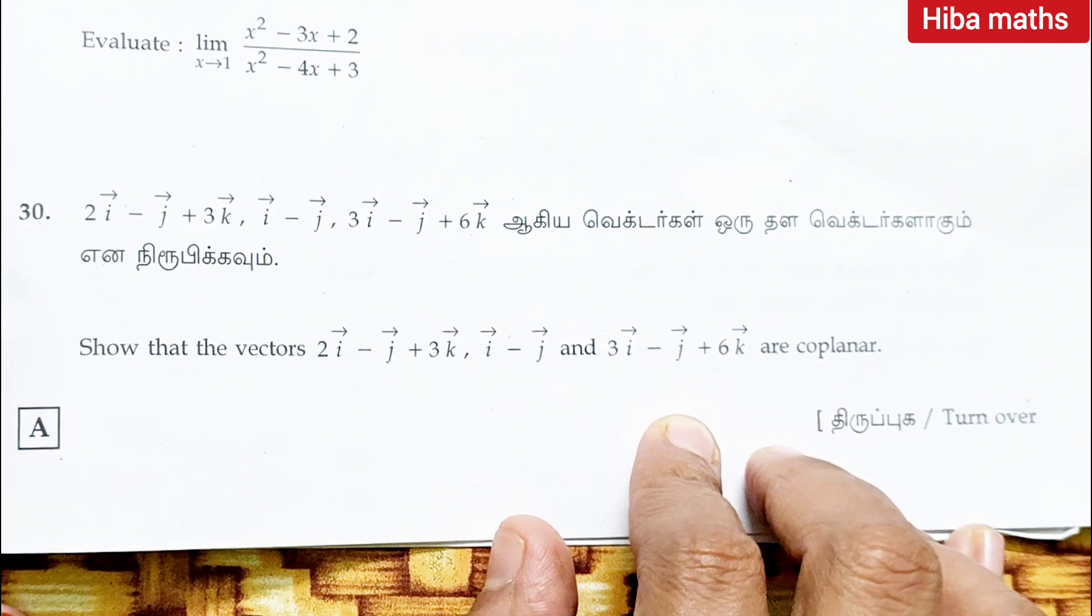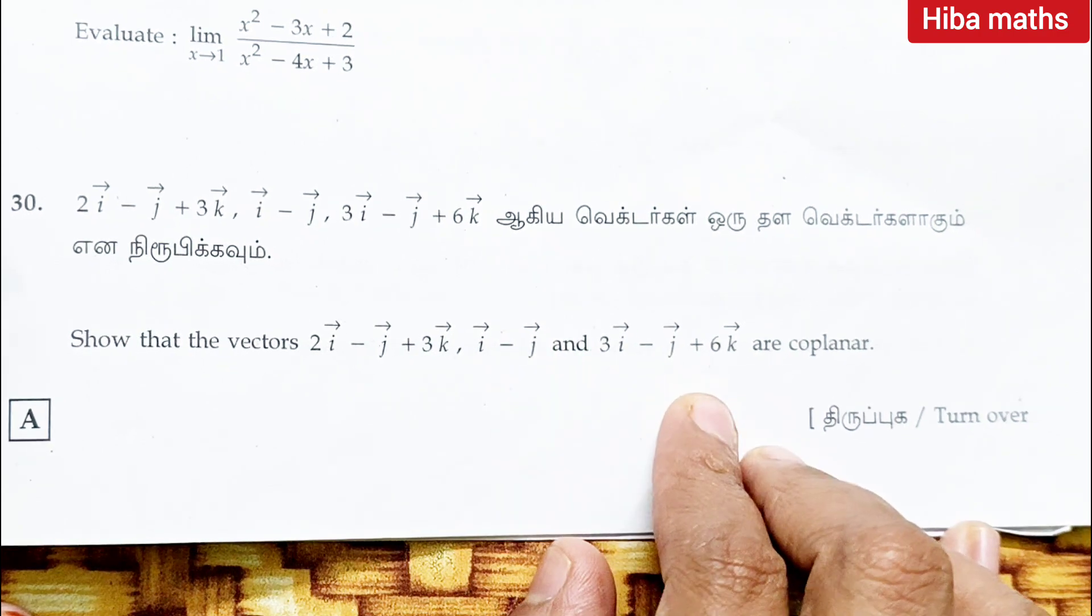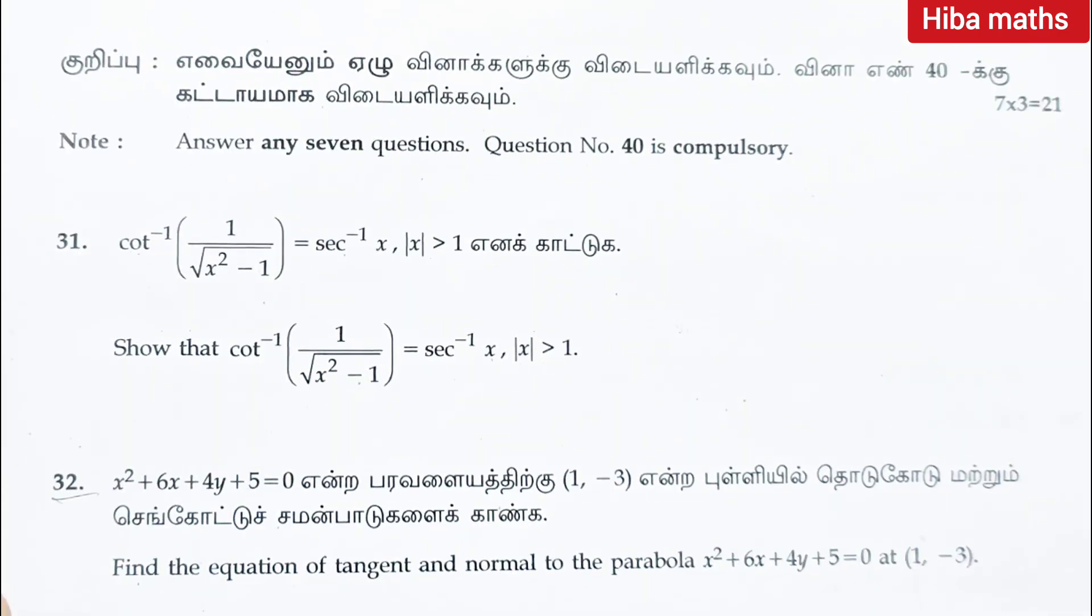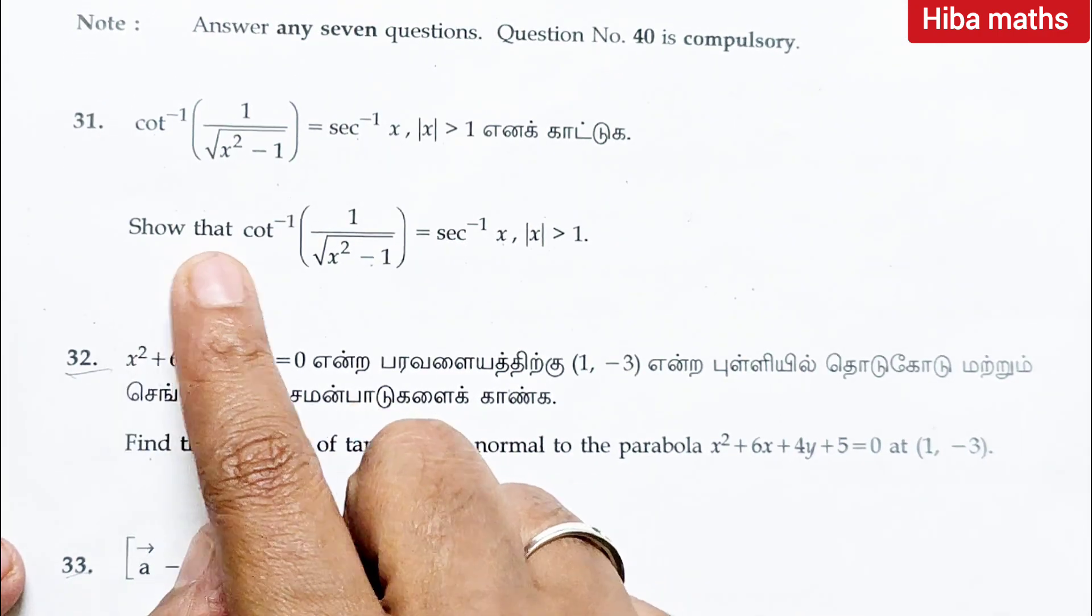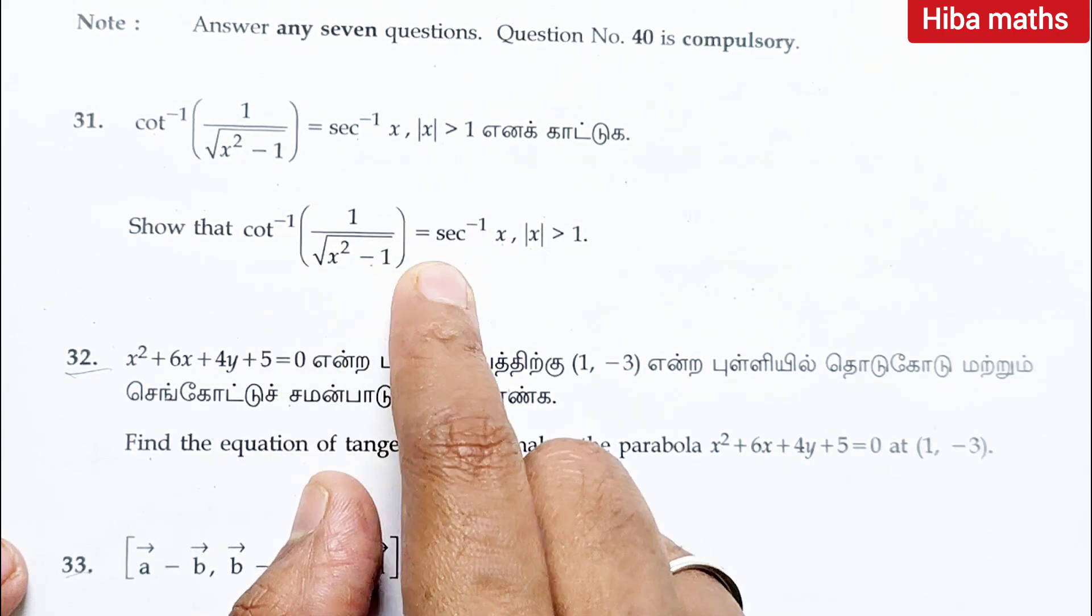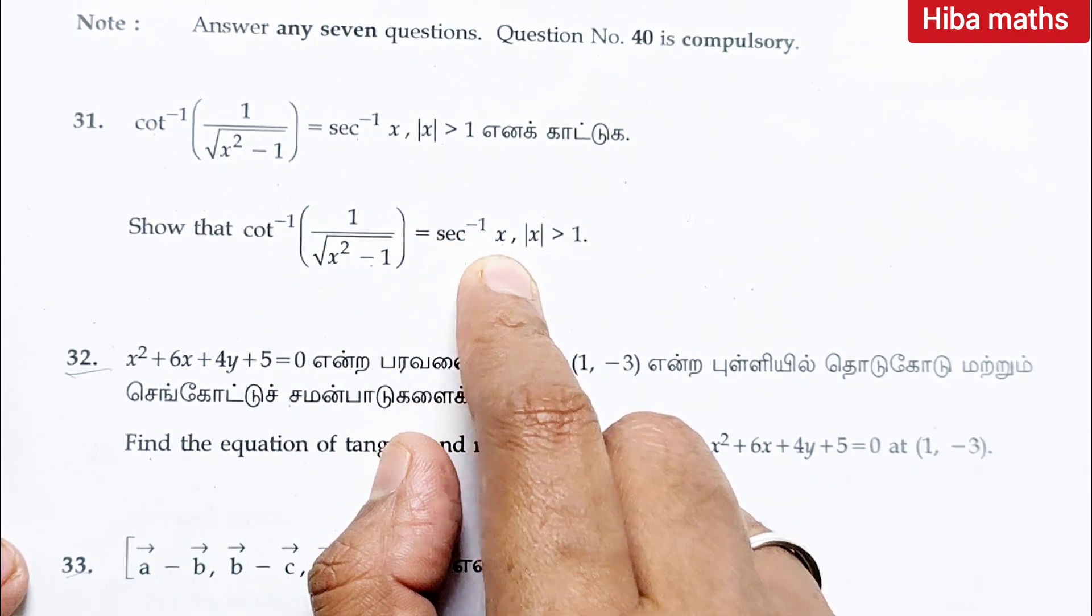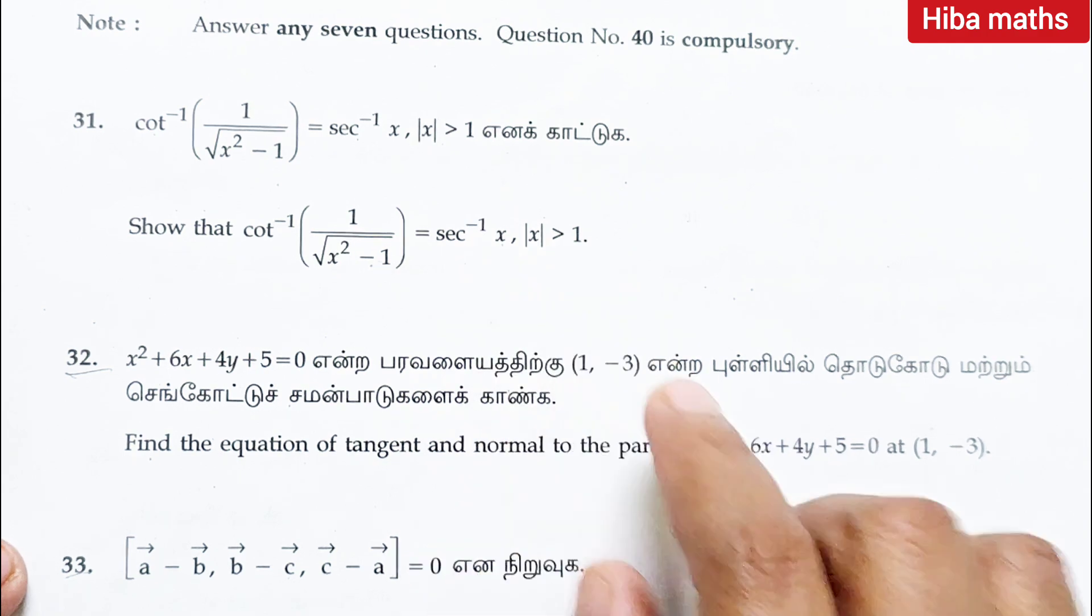Question 30: show that the vectors are coplanar. Question 31: show that cot inverse of 1 by root of x square minus 1 is equal to secant inverse x where modulus x is greater than 1.